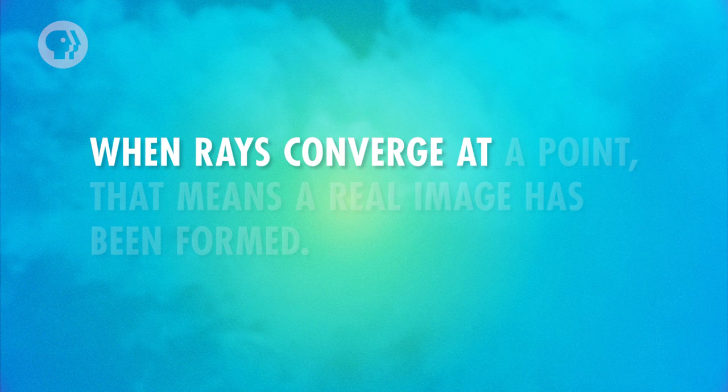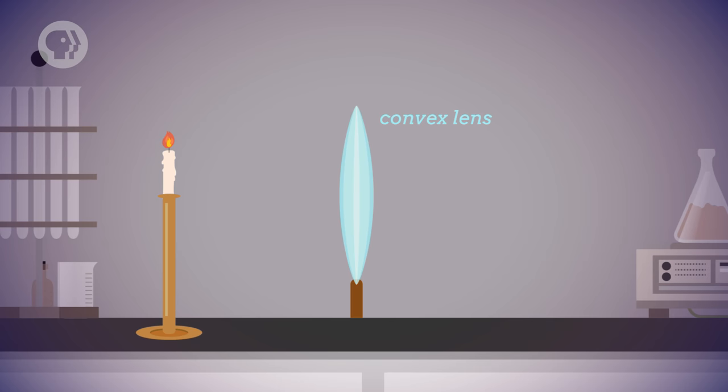Let's show this using a ray diagram, which tells us about the position and size of images as seen through a lens. Let's take a candle that's some distance from the lens, which we'll call the object distance. We'll use the object distance and the focal length of the lens to find the image distance, the location where the image forms on the other side of the lens.